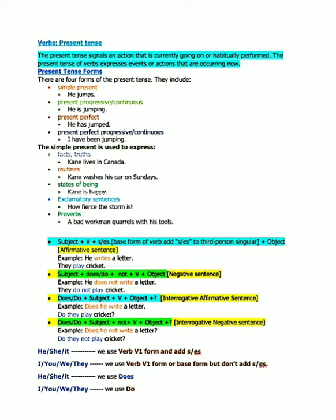That means present perfect and present perfect continuous. So let's begin. What are present tenses? The present tense signals an action that is currently going on or habitually performed - means routine-based work. The present tense of verbs expresses events or actions that are occurring now. These are habitual actions and actions which are occurring now.